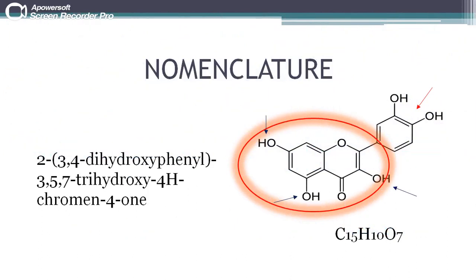The IUPAC name of quercetin is 2-(3,4-dihydroxyphenyl)-3,5,7-trihydroxy-4H-chromen-4-one with the formula C15H10O7.